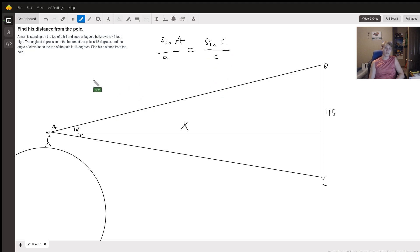So we know that angle A is 28 degrees, which is 16 plus 12. So we have that sin(28°) divided by the opposite of it, 45, is equal to... well, what are these other angles?